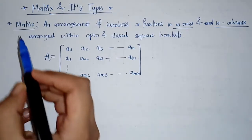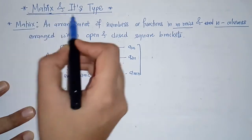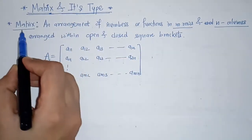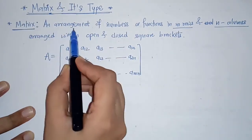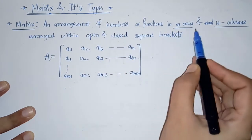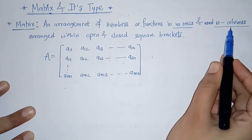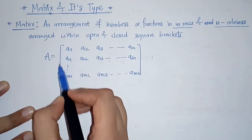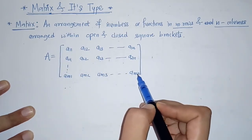Hello everyone. Today we are going to see matrix and its types. First we will see what is a matrix. A matrix is an arrangement of numbers or functions in m rows and n columns arranged within open and closed square brackets.